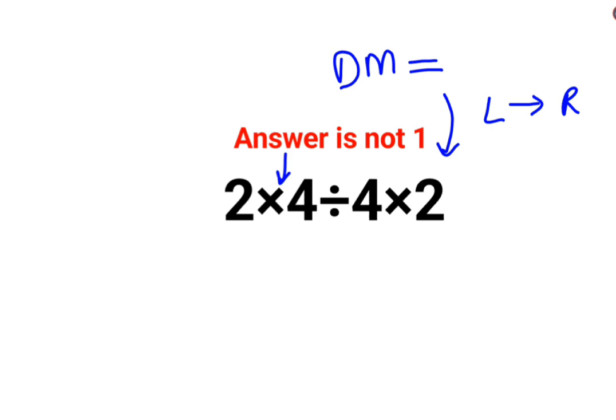So we have 2 multiplied by 4 which is 8, divided by 4, multiplied by 2. Here also I will stick to the same rule. Whatever operation happens first from your left hand side has to be done first. So we have 8 divided by 4 that gets you 2, multiplied by 2.